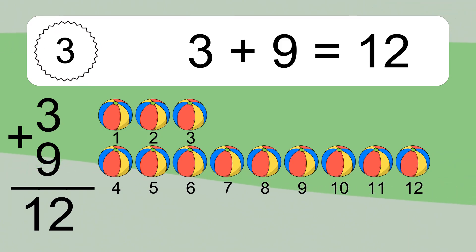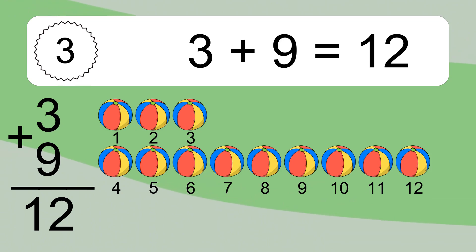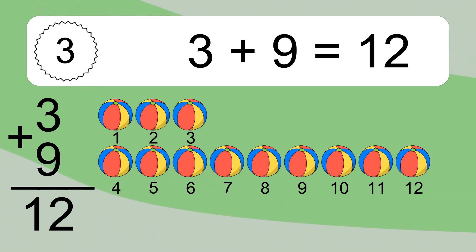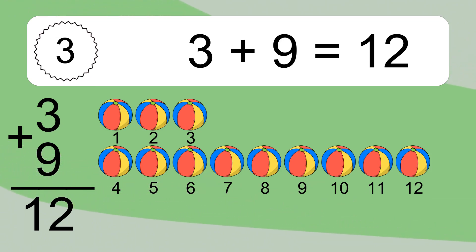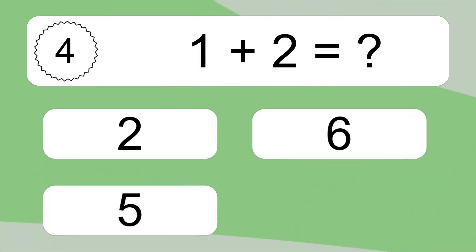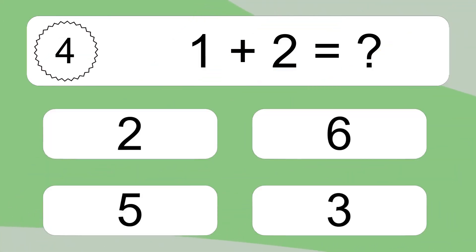3 plus 9 equals what? 1, 2, 3, 4, 5, 6, 7, 8, 9, 10, 11, 12.